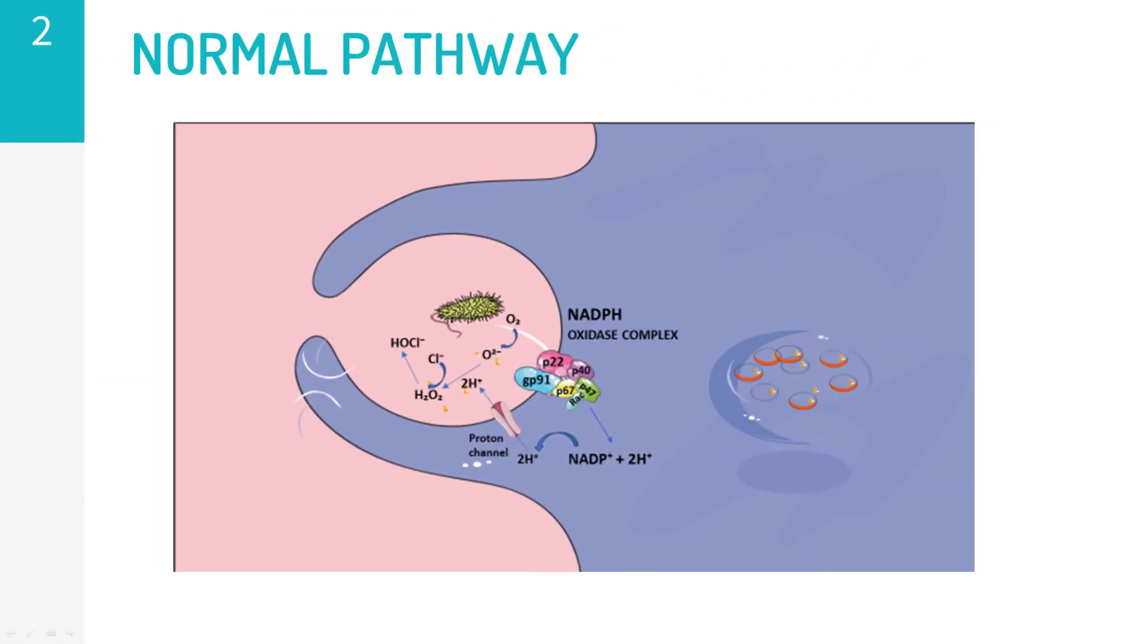In the normal neutrophil, upon activation, reactive oxygen species, or ROS, are produced in order to kill microbes in the phagosomes. This event is mediated by the multiprotein NADPH oxidase complex.